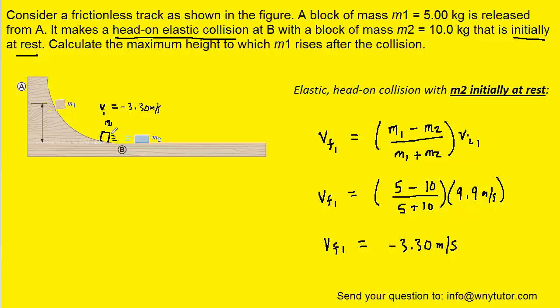And notice that block 1 is now moving in the opposite direction from what we had showed earlier. So now we put the little swooshes this way to indicate that the block is going to slide backwards up the ramp.